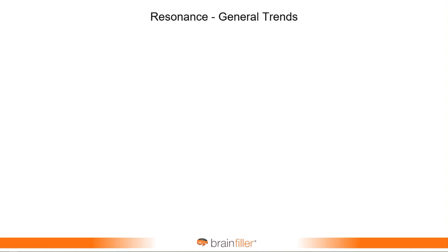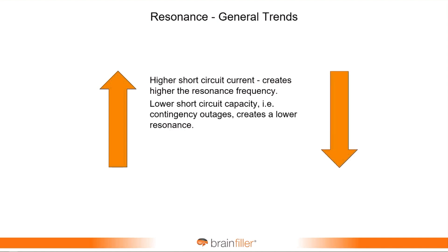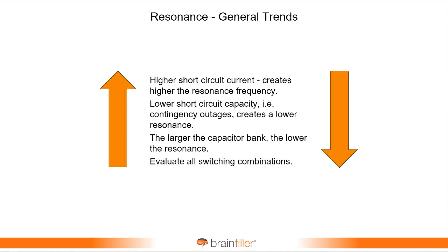The general trends are: the higher the short circuit current, the higher the resonance frequency, which normally is where you want to go — unless you're sliding up into like the seventh harmonic, which could be a problem. The lower the short circuit current, the resonance frequency tends to become lower. And in general, when you have resonance and harmonics at lower frequencies, that tends to cause bigger problems because you have larger harmonic currents at lower frequencies. Also, the larger the capacitor bank, the lower the resonance; the smaller the capacitor bank, the higher the resonance. The more capacitors you put online, the larger the bank, the resonance frequency shifts lower.